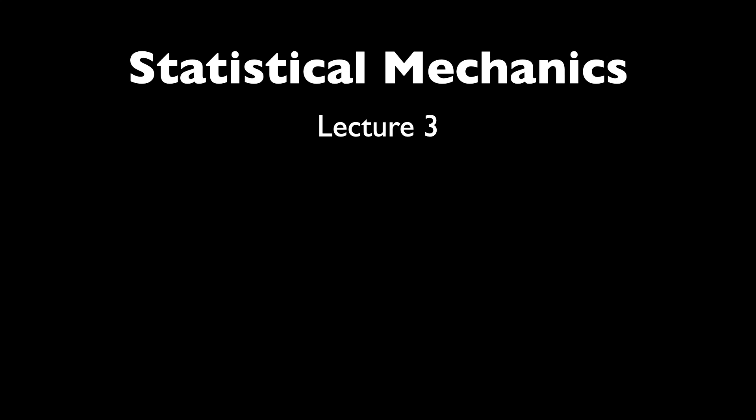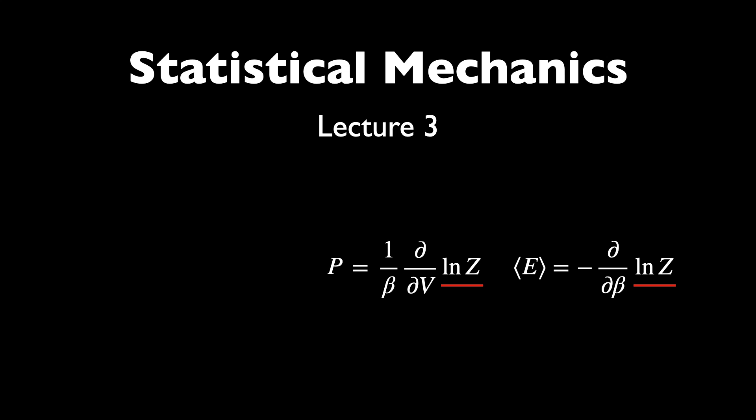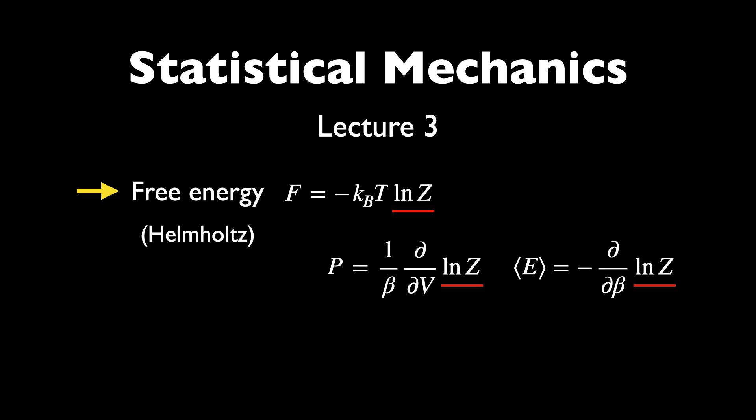For all these applications, we noticed that the log of the partition function kept showing up, for instance in calculating the pressure and energy, and much else as we shall see further in this series. Basically, most of the statistical properties of the system under thermal equilibrium can be calculated by taking the appropriate derivatives of log Z. Multiplying this by the negative of k_B T — or the inverse of beta — is what is called the free energy, or the Helmholtz free energy to be more specific, after the German physicist Hermann von Helmholtz. This is an example of what is known as a thermodynamic potential, and has far more marvelous uses than for calculating pressure and energy.